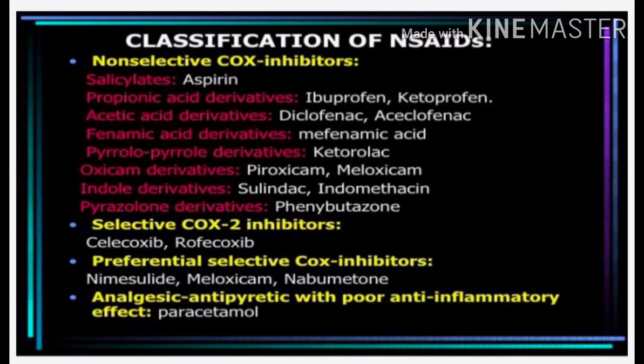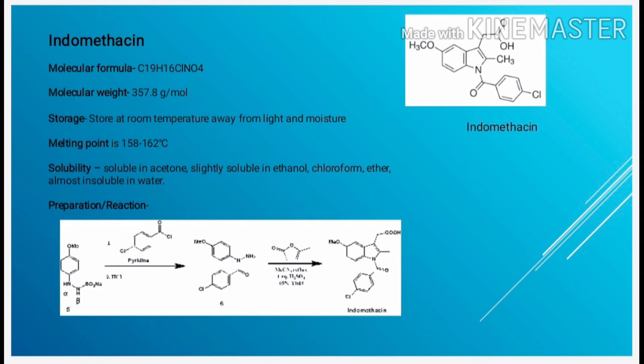The classification of NSAIDs: NSAIDs are classified into four groups. The first group is non-selective COX inhibitors, with examples including salicylates such as aspirin, and propionic acid derivatives such as ibuprofen. The second group is selective COX-2 inhibitors, with examples including celecoxib and rofecoxib. The third group is preferential selective COX-2 inhibitors, with drugs such as nimesulide and meloxicam. The fourth group is analgesics and antipyretics with poor anti-inflammatory effect, such as paracetamol.